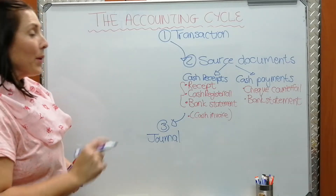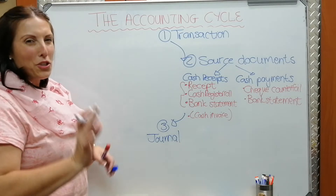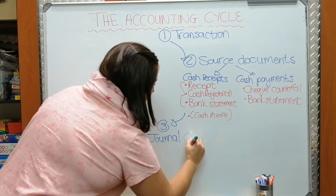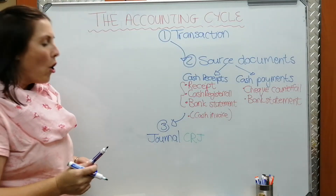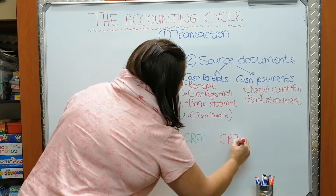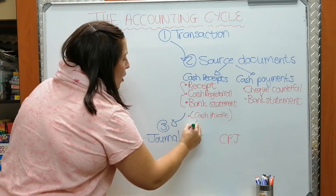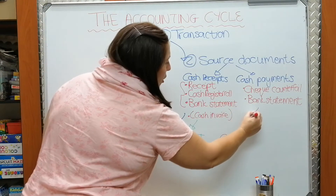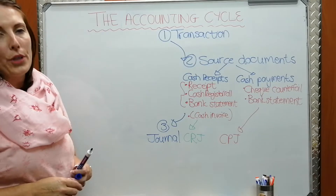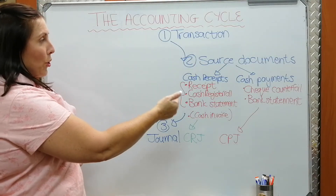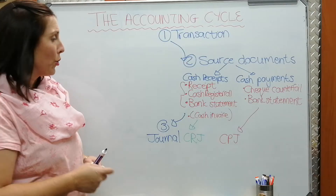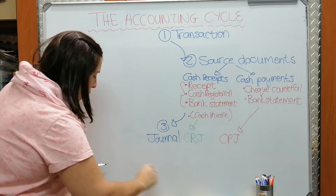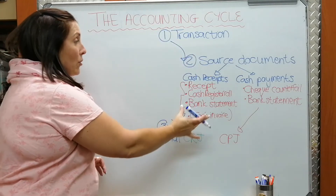In Grade 8 we are going to work with the Cash Receipts Journal — the CRJ — and the Cash Payments Journal — the CPJ. The CRJ is written in green because that's the journal we use when we receive money, and the Cash Payments Journal is used for all the money we pay out. Step three is to take our source documents and record that information in our journals.